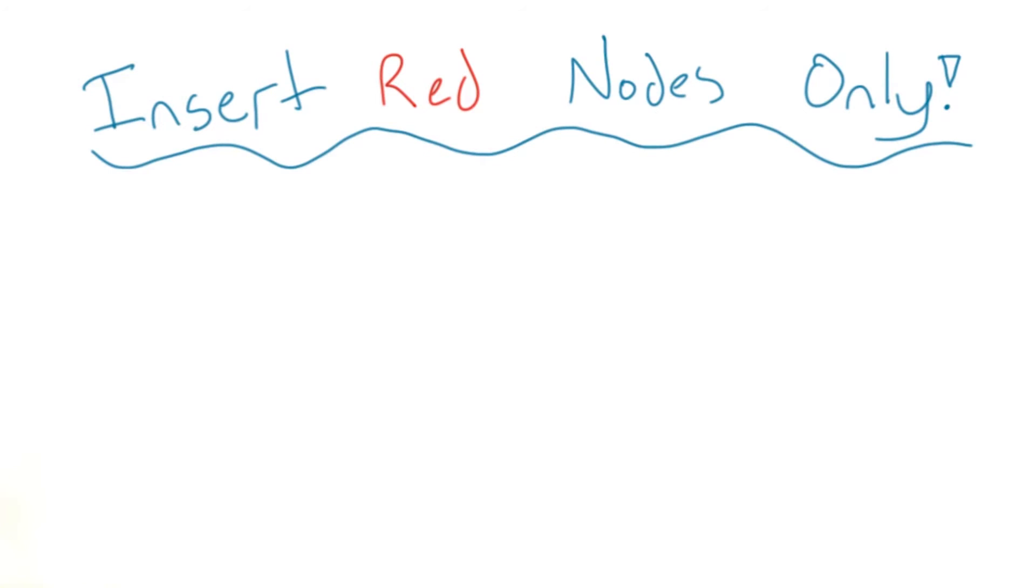One overall rule of insertion is that you should try to insert a node as a red node, which from here on out I'll represent as both red and square to help with differentiation, and then change its color as needed.